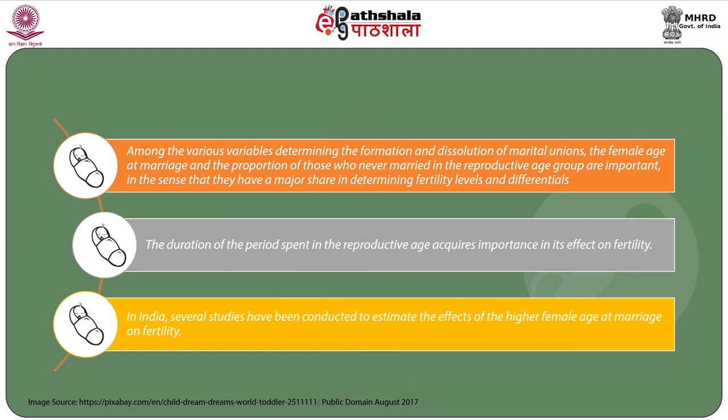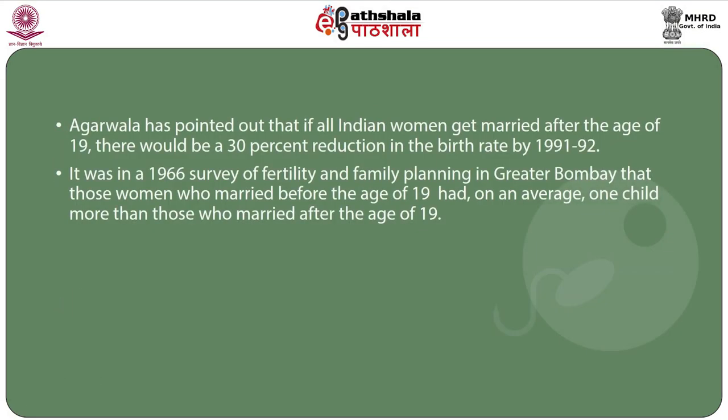The duration of the period spent in the reproductive age acquires importance in its effect on fertility. In India, several studies have been conducted to estimate the effects of higher female age at marriage on fertility. Agarwala has pointed out that if all Indian women got married after the age of 19, there would be a 30 percent reduction in the birth rate by 1991-92. A 1966 survey of fertility and family planning in greater Mumbai found that women who married before the age of 19 had, on average, one child more than those who married after the age of 19.